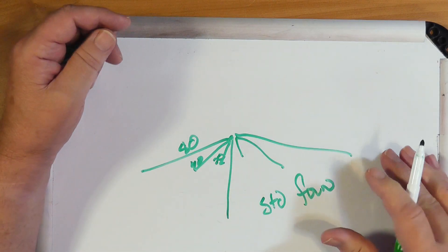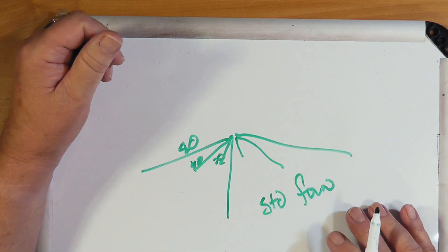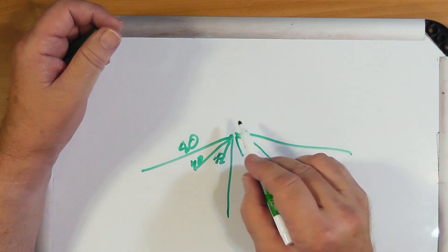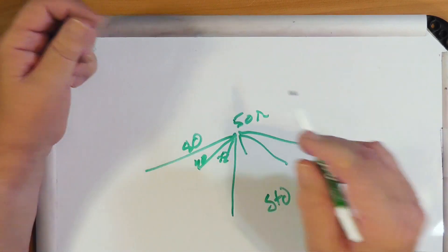You don't need a balun or unun here. Just strictly feed it with 50 ohms, because the center impedance here is within some range of 50 ohms. And you should be able to tune this with the tuner in your rig. Okay.